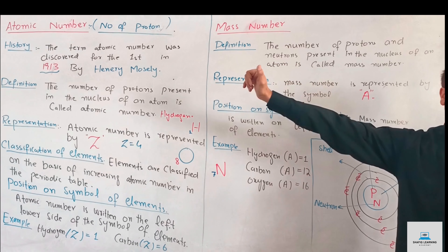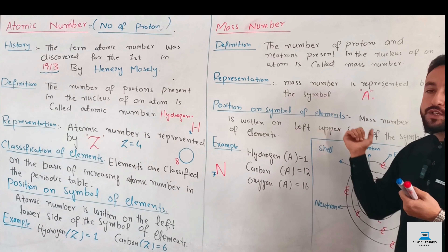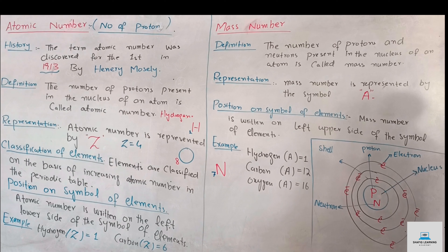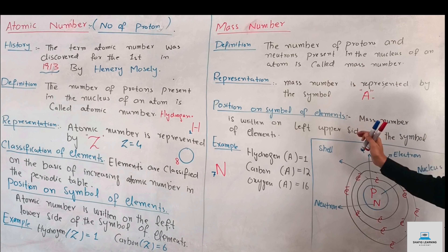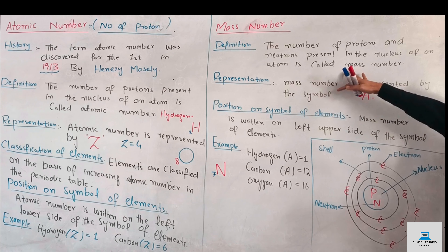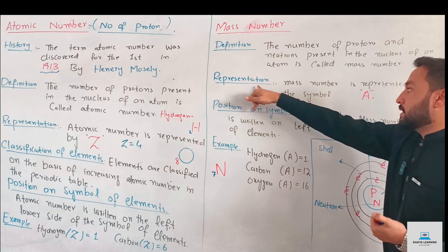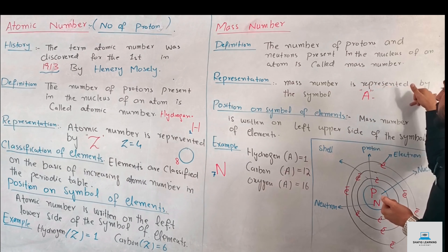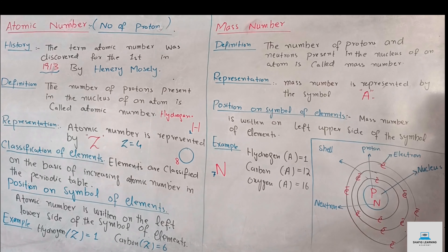The atom contains protons and neutrons, and the total count of protons plus neutrons gives the mass number. The mass number is represented by the symbol A.